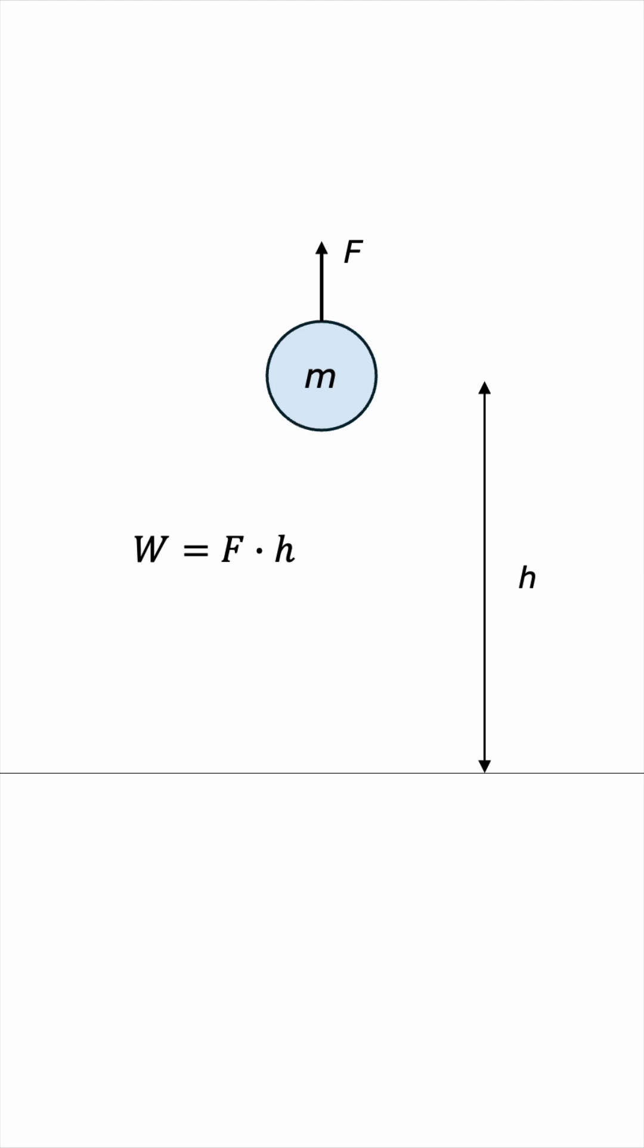Now, assuming that this lifting happened at a constant velocity, then this force must exactly counteract the force of gravity so that the acceleration would be zero. In other words, F must be equal to Mg. So the work done is equal to Mg times H.